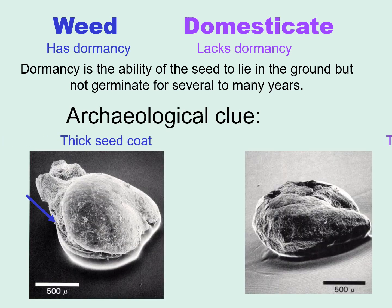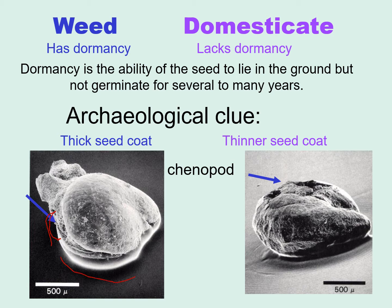How does this translate into something an archaeologist can discover in the archaeological record? Weed seeds might have dormancy because they have thick seed coats. Here you can see a very thick seed coat, versus over here where the seed coat looks paper thin in comparison. A seed that lacks dormancy may have a very thin seed coat, and a seed with dormancy may have a very thick seed coat. We paleoethnobotanists think that the seeds shown here — both from the same pit at a site in southwestern Ohio — are actually the same species, but simply the domesticate form on the right and the weed on the left.